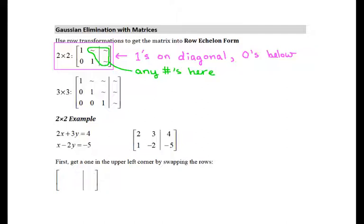For our 3x3 system of equations, it's the same description, and this is how it looks. We have 3 1s on the diagonal, we have 3 0s below, and then we have 6 other numbers that can be any value.